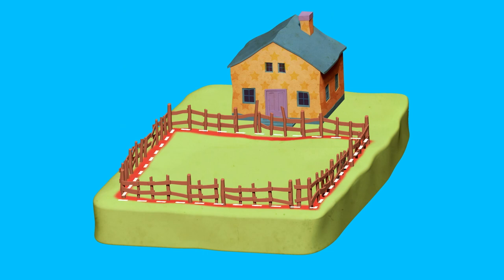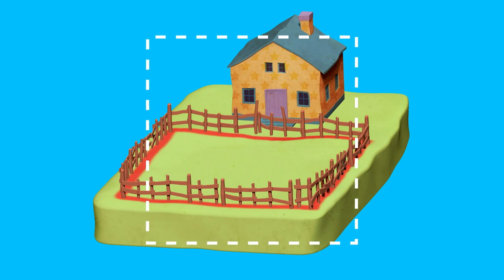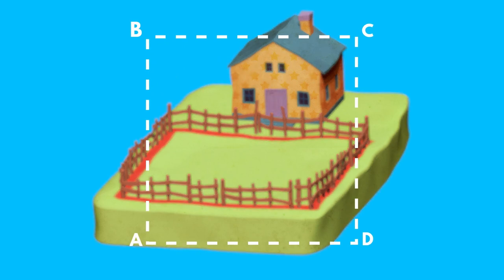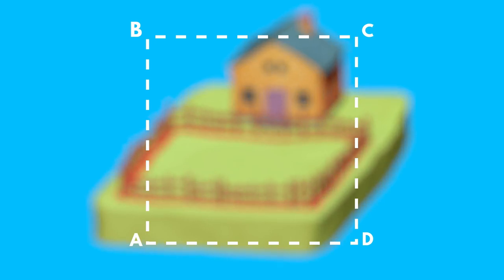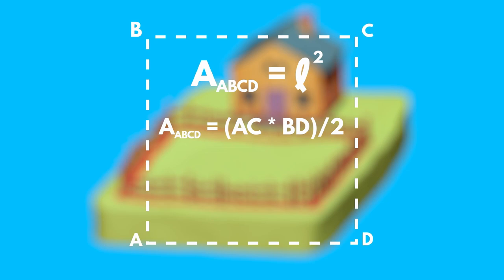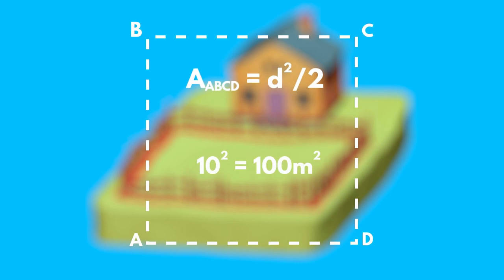Let's now say you want to pave the same square-shaped courtyard. The area of the yard will help you find out how many square meters of pavement you will need to cover the whole surface. The area of the square can be found in two ways. First, the area equals the square of its side length: A = L². Second, the area equals the semi-multiplication of its diagonals. Since the diagonals of the square have equal lengths, we obtain the formula A = d²/2. In our case, with a side of 10 meters, the area of the courtyard is 100 square meters.